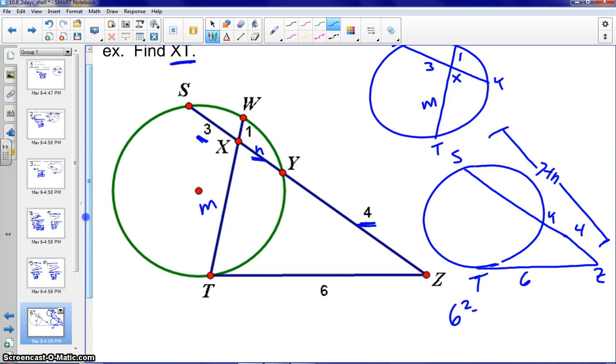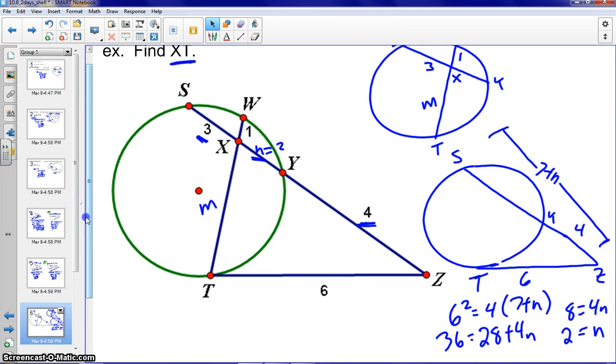Tangent squared equals outer times whole. So we'll get 36 equals the 28 plus 4N. So 8 equals 4N. Therefore, N is equal to 2. And we can go ahead and plug that back into our diagram. We know N is 2. Let me switch colors here so I can highlight that. N equals 2.